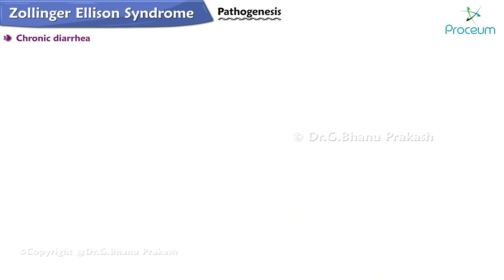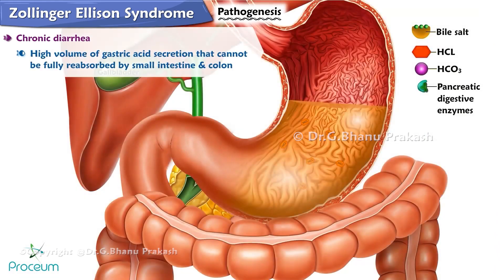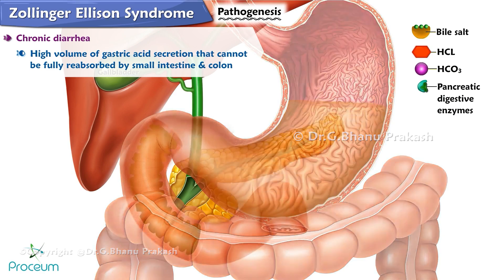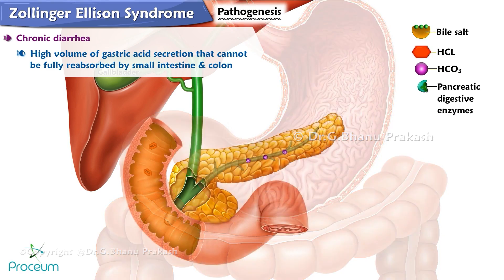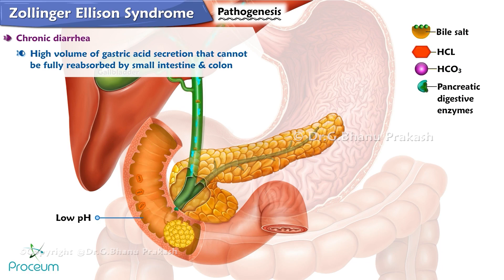Chronic diarrhea in Zollinger-Ellison syndrome results from the high volume of gastric acid secretion that cannot be fully reabsorbed by the small intestine and colon. The rate of gastric acid secretion exceeds the neutralizing capacity of pancreatic bicarbonate, resulting in an exceptionally low pH of intestinal contents. This low pH inactivates pancreatic digestive enzymes, interfering with emulsification of fat by bile acids and damaging intestinal epithelial cells in villi.